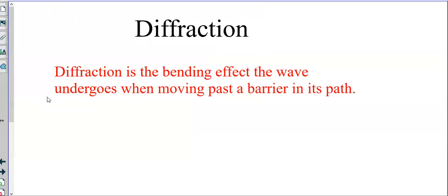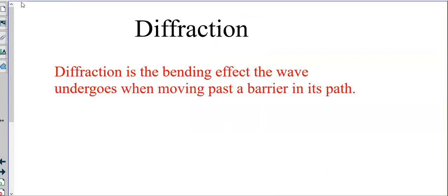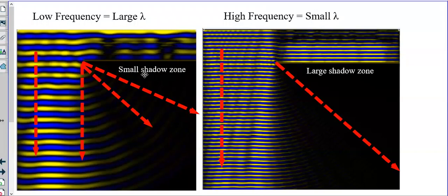So quickly: diffraction is the bending effect a wave undergoes when moving past a barrier — that curving of the wave. Looking side by side with a different color scheme: when you have low frequency you'll have a large wavelength, and large wavelengths are going to have more diffraction — they will bend around the corner a lot easier. When you bend around the corner a lot easier you have a small shadow zone. Whereas if you have a high frequency wave, meaning a smaller wavelength going across the same barrier, you're going to have a larger shadow zone — so less diffraction occurs.